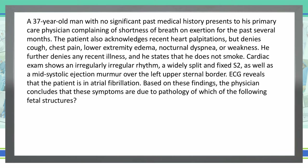Cardiac examination shows an irregularly irregular rhythm, a widely split and fixed S2, as well as a mid-systolic ejection murmur over the left upper sternal border. ECG reveals that the patient is in atrial fibrillation. Based on these findings, the physician concludes that these symptoms are due to pathology of which of the following fetal structures.